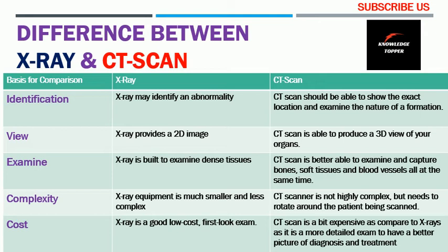The second basis for comparison is the view: an X-ray provides a 2D image, while a CT scan produces a 3D view of your organs. The third basis is examination: an X-ray is built to examine dense tissues, while a CT scan is better able to capture bones, soft tissues, and blood vessels all at the same time.